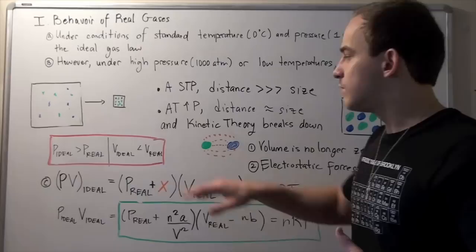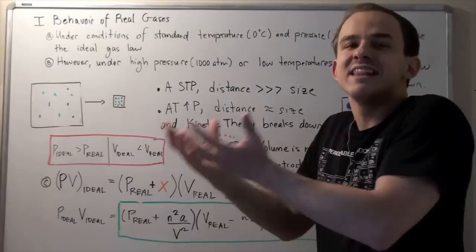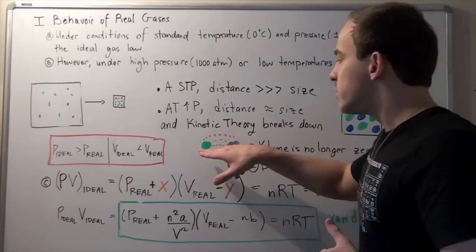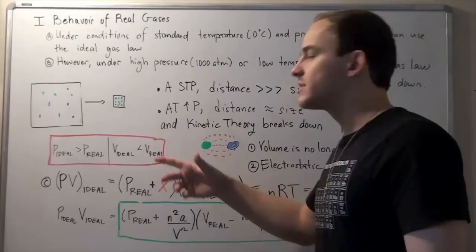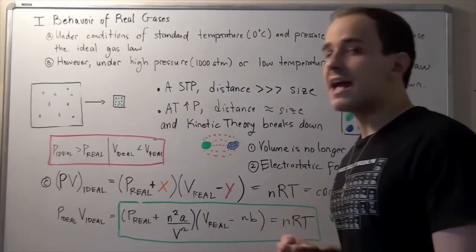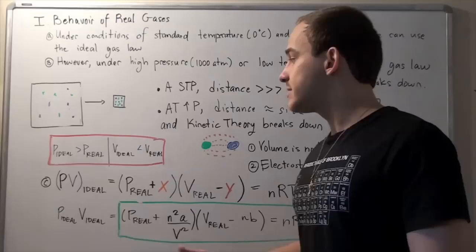Likewise, let's examine the volume of ideal versus real gases. The volume of the ideal gas is less than the volume of the real gas, because when accounting for real gases you must consider the volume of the molecules themselves. The real gas volume includes the volume of the molecules, so the volume of real gases will be greater. Now let's see what the gas law is for real gases.